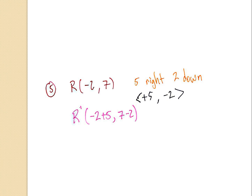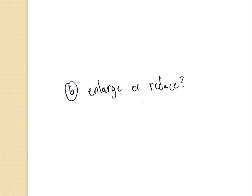Go ahead and pause the video. Make sure that your partner next to you and to the left and right of you and in front of you has written this down on their paper. As the teacher, you should walk around and make sure, while the video is paused, that everyone has this written on their paper. Now that everyone has number five written down, let's take a look at number six.